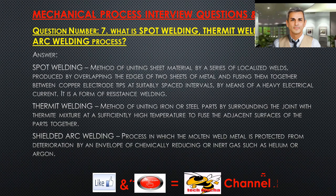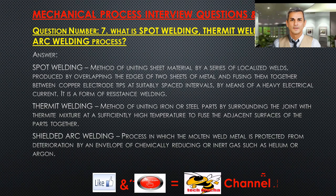Question number 7. What is spot welding, thermit welding, and shielded arc welding process? Answer. Spot welding: a method of uniting sheet material by a series of localized welds, produced by overlapping the edges of two sheets of metal and fusing them together between copper electrode tips at suitably spaced intervals by means of a heavy electrical current. It is a form of resistance welding.